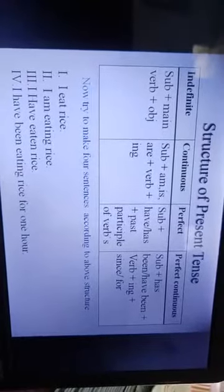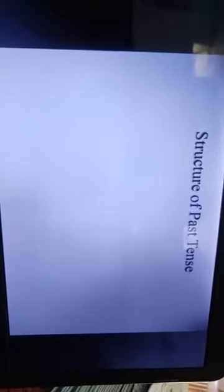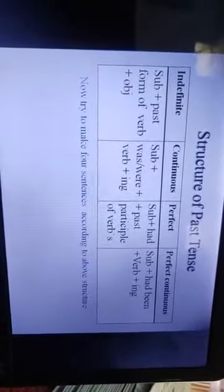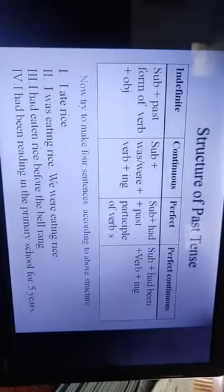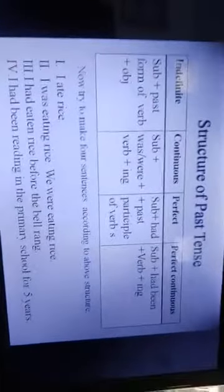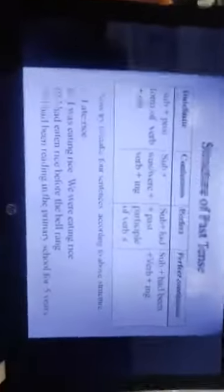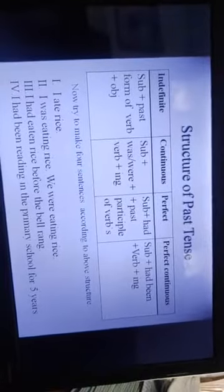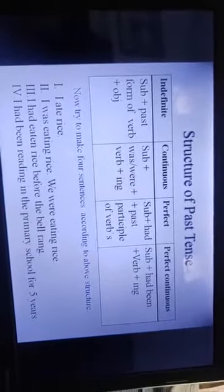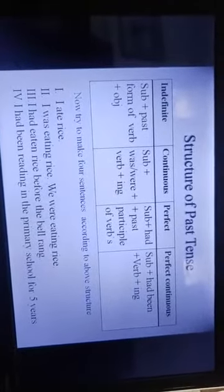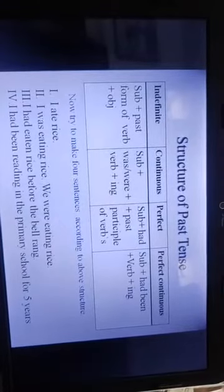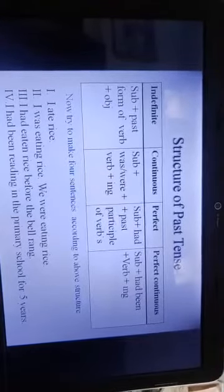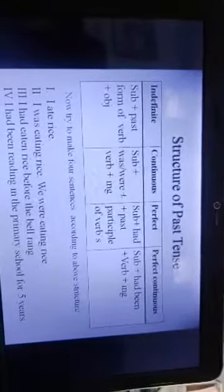Now we will learn the structure of past tense with examples. Past indefinite tense structure: Subject + past form of verb + object. For example: 'I ate rice' — 'I' is the subject, 'ate' is the past form of 'eat', and 'rice' is the object.